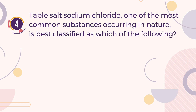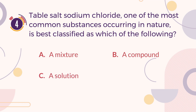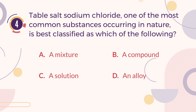Number 4. Table salt, sodium chloride, one of the most common substances occurring in nature, is best classified as which of the following? A. A mixture. B. A compound. C. A solution. D. An alloy. The correct answer is B. A compound.